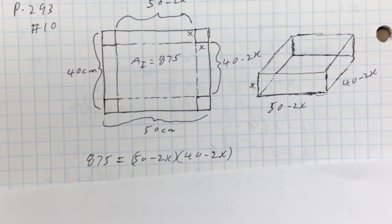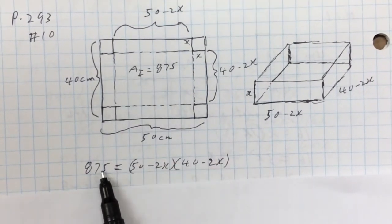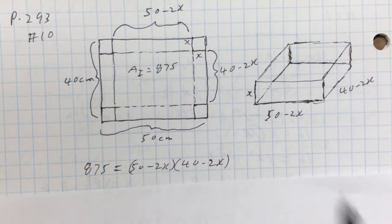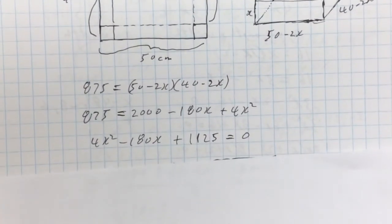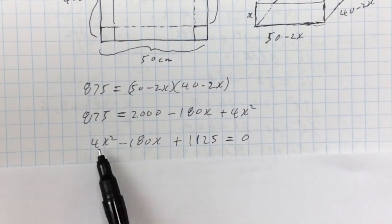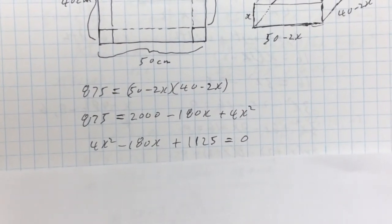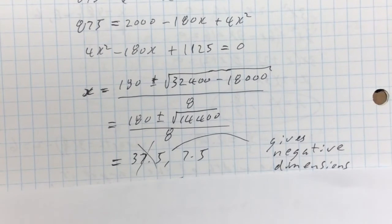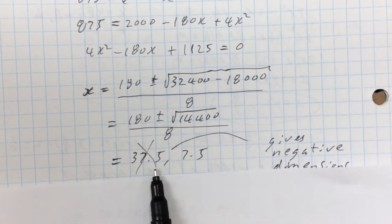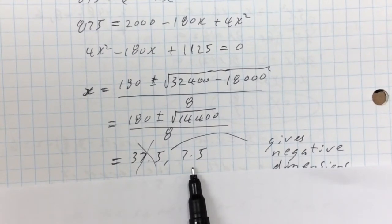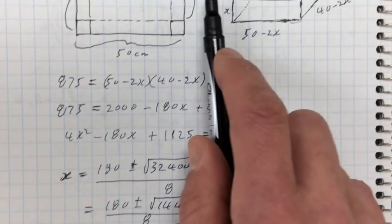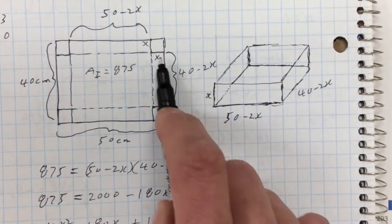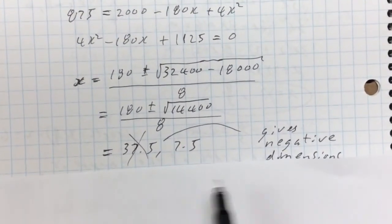They're saying the area of the rectangular base is 875. That rectangle is (40 − 2X) times (50 − 2X) = 875. Expanding gives a quadratic equation. Working it out, 4 is not a factor so factoring is too difficult — we use the quadratic formula. Plugging in all the numbers gives X = 37.5 or X = 7.5. It can't be 37.5 because 40 minus 2 times 37.5 would give a negative dimension. So X = 7.5 is the only valid solution.